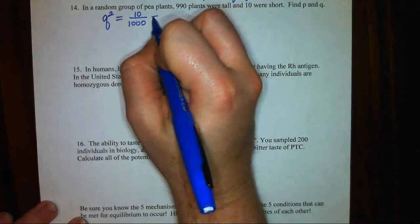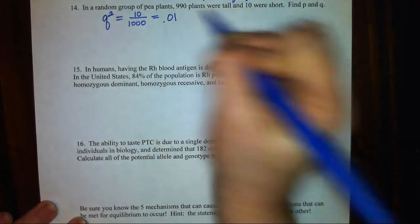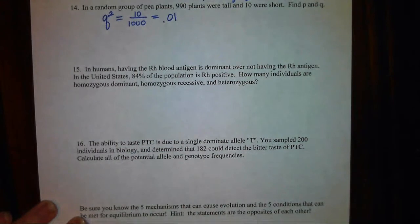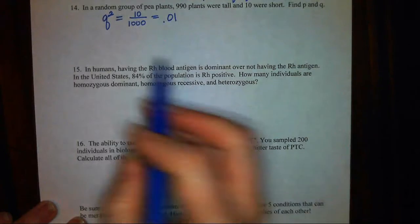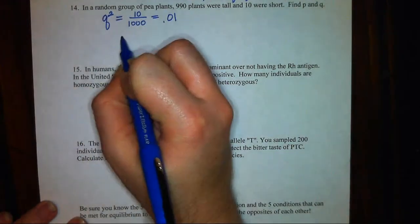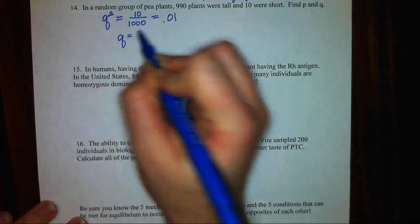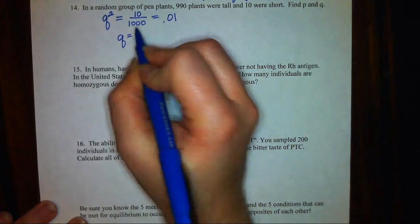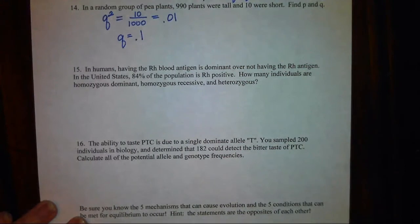If I write that as a decimal, Q squared equals 0.01. To find Q, or the percentage of the alleles that are recessive, I'm going to square root both sides. So square root Q squared to get Q. Square root 0.01 to get 0.1.